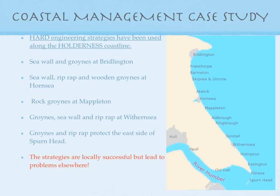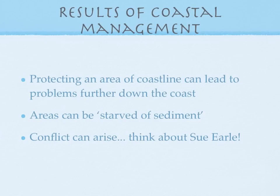Looking particularly at the case of a lady called Sue Earle — if you Google that you can find a video where she explains what's happened to her house. The results of coastal management are some positive, some negative. Protecting a coastline can result in problems further down the coast: places can be starved of sediment, higher rates of erosion can be produced, and lots of conflict can arise. Think about the case of Sue Earle. That concludes our revision of coastal management, and I hope all of your other revision goes to plan. Thank you very much.